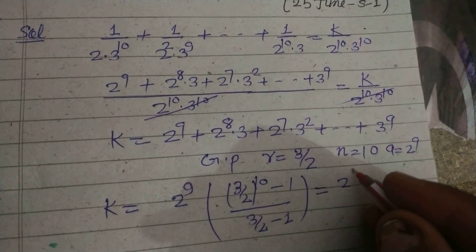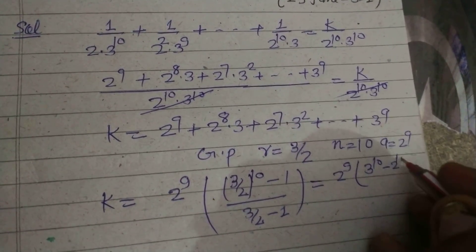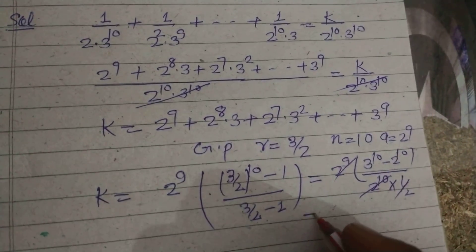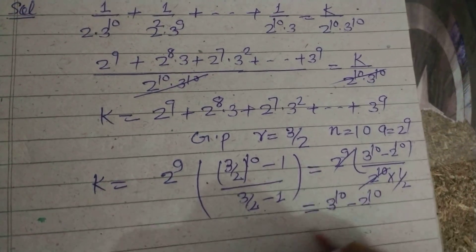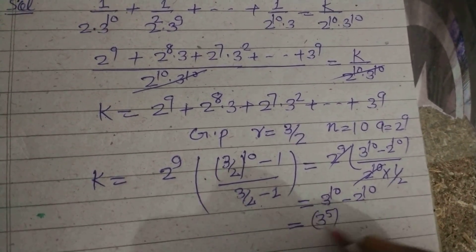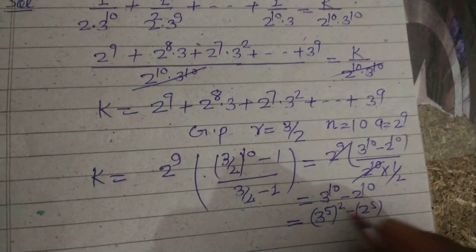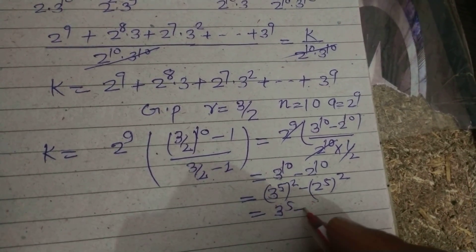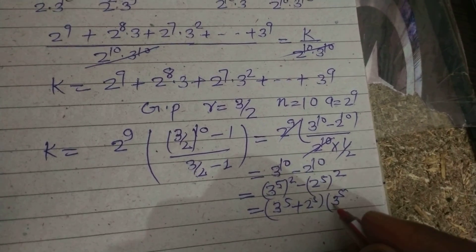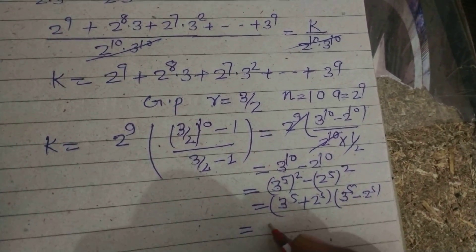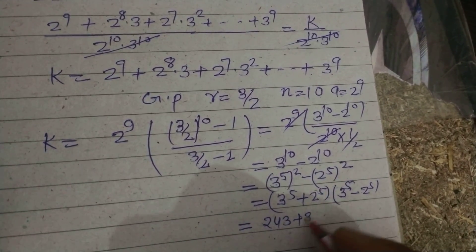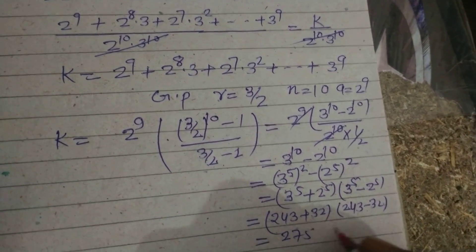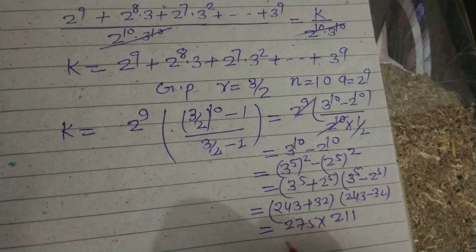This simplifies to 2^9 · (3^10 − 2^10) / 2^10, which gives (3^10 − 2^10). Using the difference of squares factorization, a^2 − b^2 = (a+b)(a−b), we write (3^5 + 2^5)(3^5 − 2^5). Since 3^5 = 243 and 2^5 = 32, we get 275 × 211.